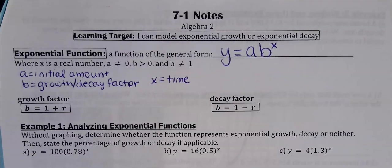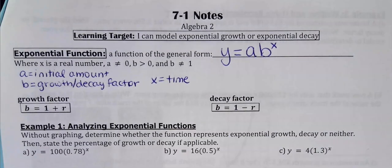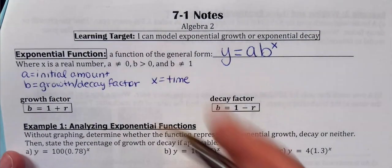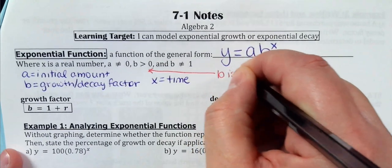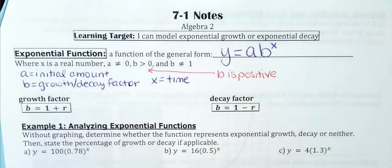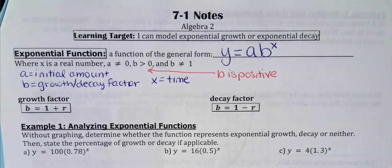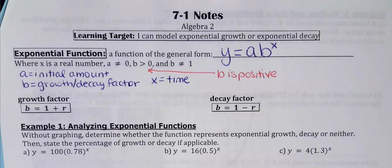A can't be equal to zero — if a was zero, it would wipe the whole equation out because we'd be multiplying by zero. B has to be greater than zero, meaning b must be a positive number. And b can't be equal to one, because one to any power is just one, so if b equaled one it would actually just be the equation of a line.